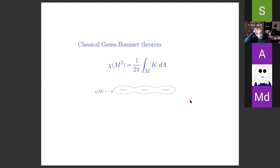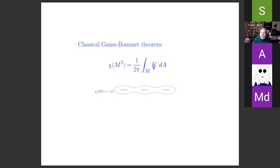The classical Gauss-Bonnet theorem is a relationship between the Euler characteristic of a compact surface without boundary and the Gauss curvature. It tells you that the integral of the Gauss curvature against intrinsic area is just 2π times the Euler characteristic. In particular, the integral of the Gauss curvature on a compact surface without boundary is always 2π times an integer — namely the Euler characteristic.